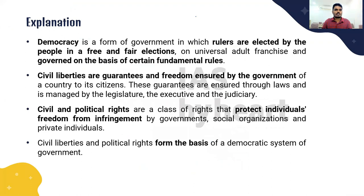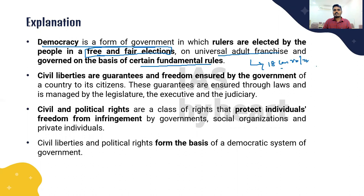So what is this democratic form of government? In a political sense, democracy is a form of government in which rulers are elected by the people in free and fair elections. Everybody has their own role in elections on the basis of universal adult franchise. Universal adult franchise means whoever is of age 18 or above can vote in elections. Civil liberties are guarantees and freedoms ensured by the government to its citizens, managed through laws by the legislature, executive, and judiciary.